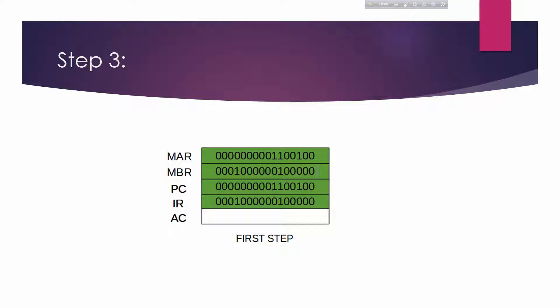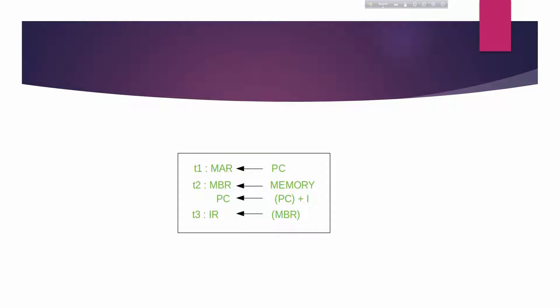Symbolically, we can write this sequence of events as follows. The notation t1, t2, and t3 represent successive time units. We assume a clock is available for timing purposes, with regularly spaced clock pulses where each pulse defines a time unit. All time units are of equal duration. Each micro-operation can be performed within a single time unit. In the first time unit (t1), move the contents of the PC to the MAR. In the second time unit (t2), move the contents of the memory location specified by MAR to the MBR, and increment the PC by one.